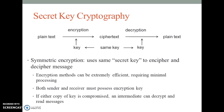Secret key cryptography — Symmetric encryption: Symmetric encryption indicates that the same key, also known as the secret key, is used to conduct both the encryption and decryption of the message. Symmetric encryption can be extremely efficient, requiring minimal processing. The problem is that both the sender and receiver must own the encryption key. If either copy of the key is compromised, an intermediary can decrypt and read the message. One challenge is getting the key to the receiver, a process that must be conducted out of band to avoid interception.